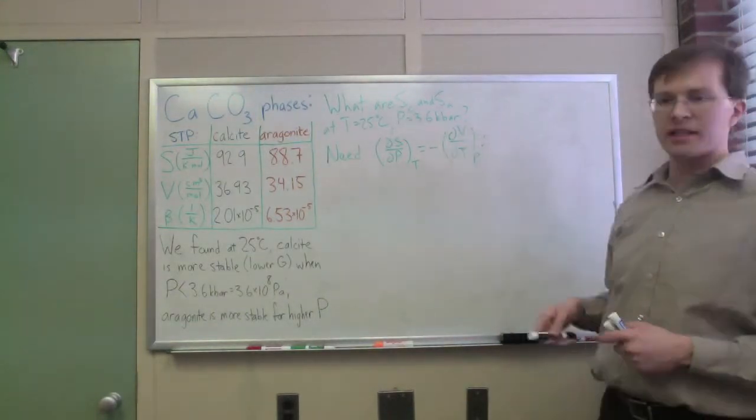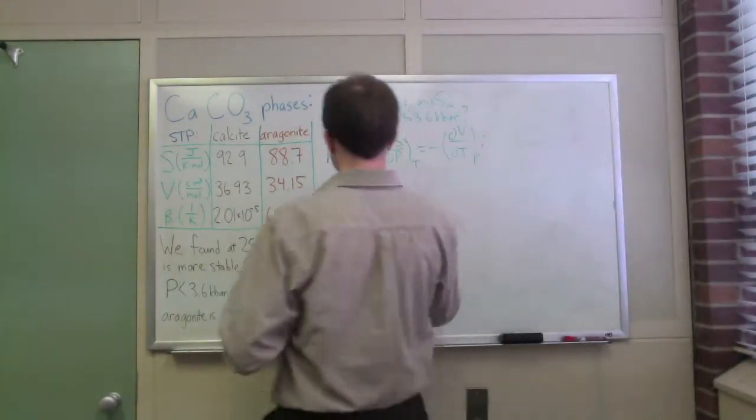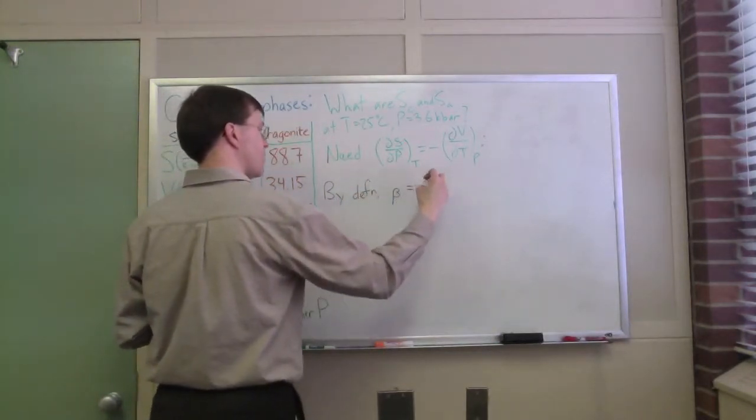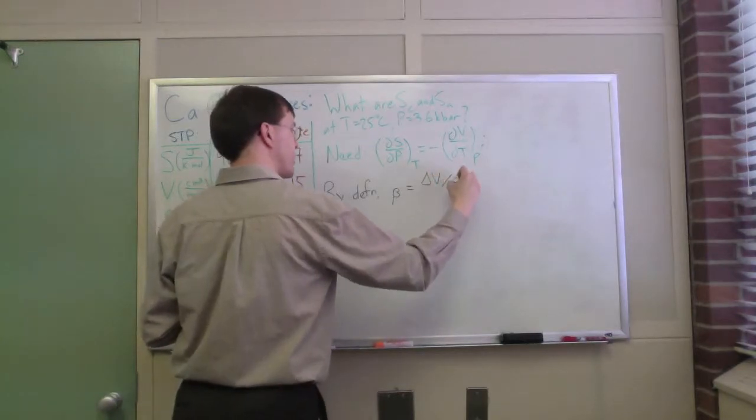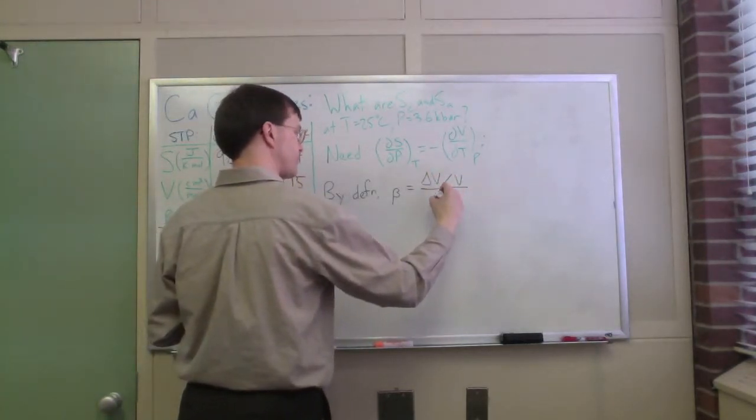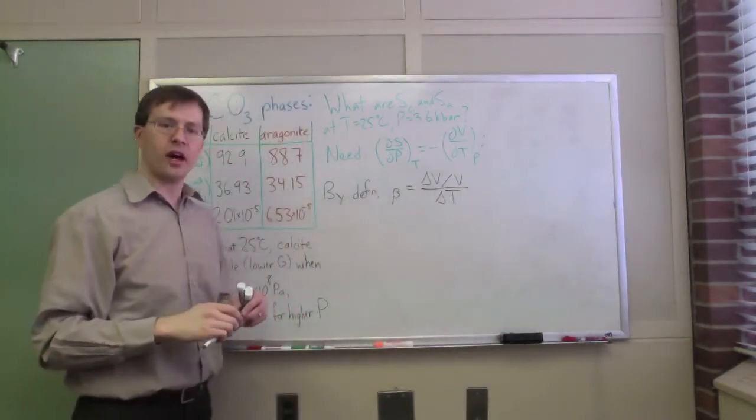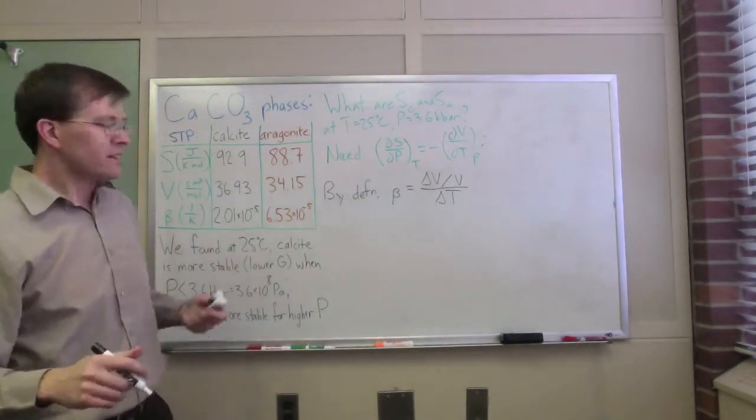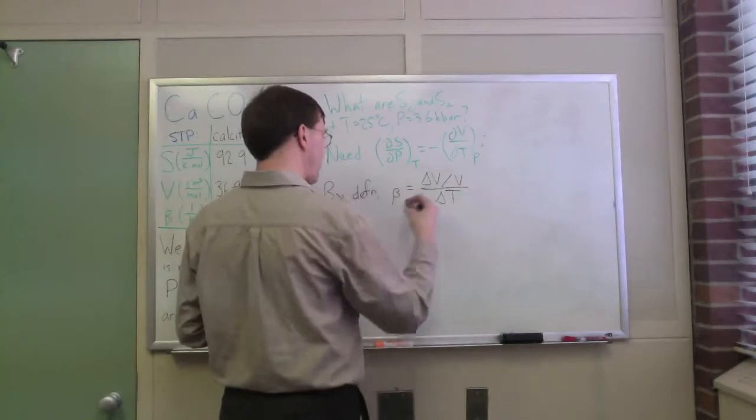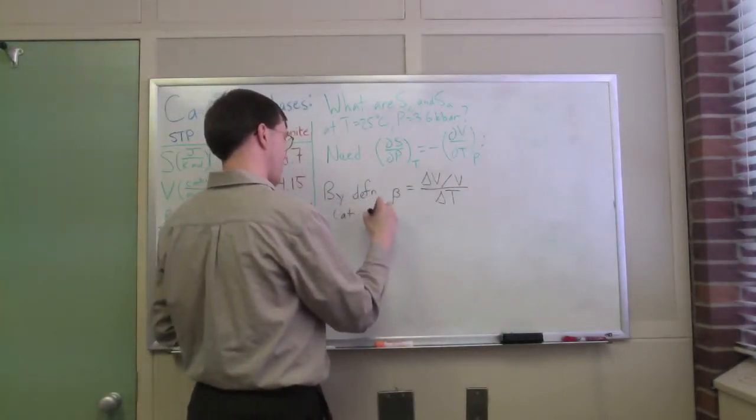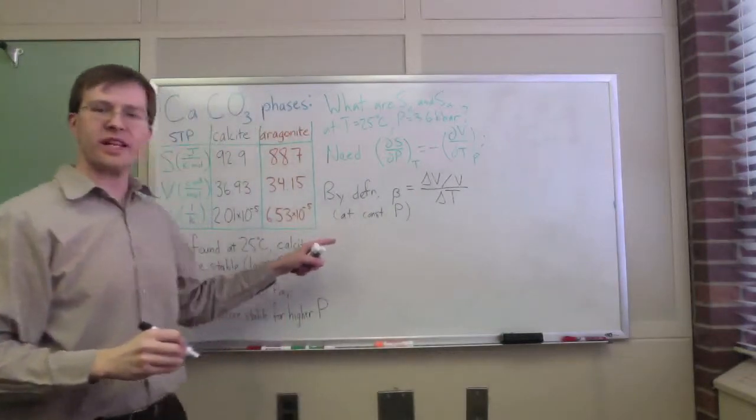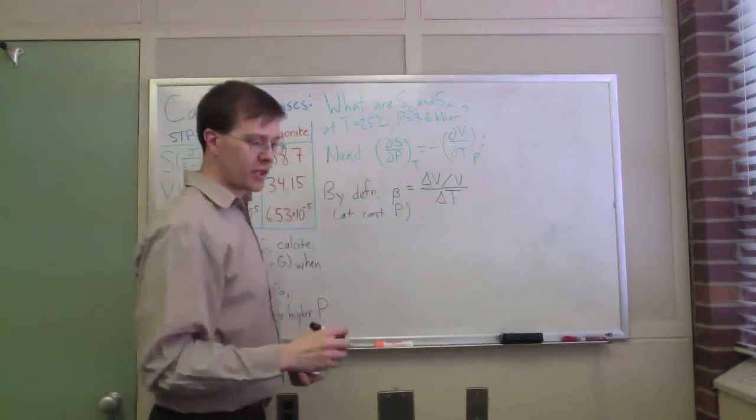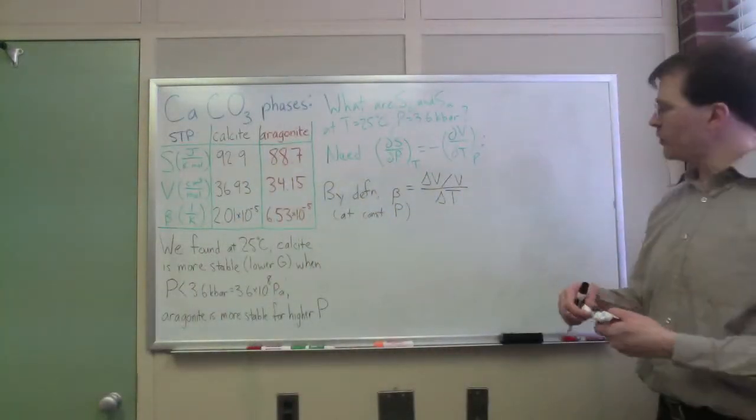The fun part is this dV/dT at constant pressure is very directly related to the thermal expansion coefficient. This is volume with respect to temperature—change of volume with respect to temperature. Beta by definition was the fractional change in volume, so delta V over V over delta T. That was the definition of beta, the volume thermal expansion coefficient, defined at constant pressure.